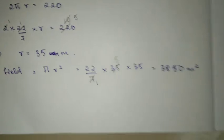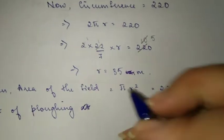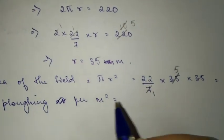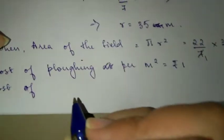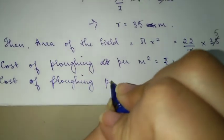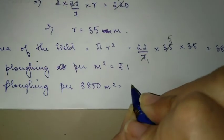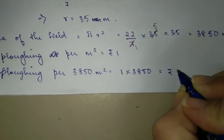Cost of plowing per 1 meter square is rupees 1, which is given in the question. The area is 3850 meter square, so cost of plowing 3850 meter square is 1 into 3850. So you get rupees 3850.